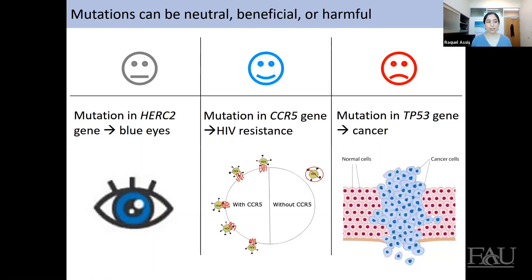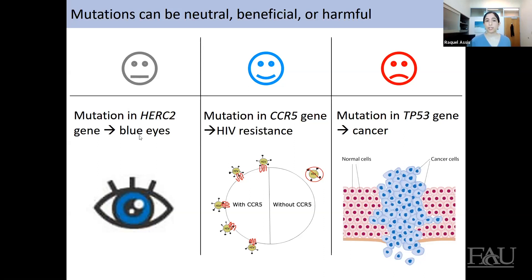You may automatically think of a mutation as something bad, but mutations can have a whole range of effects. They can be neutral — no effect on function. They can be beneficial — a positive effect. Or they can be harmful — a negative effect. For a neutral mutation: about 10,000 years ago, a mutation in the HERC2 gene caused blue eyes to arise. Before that, all individuals had either brown or green eyes. This is neutral because it has no effect on function — it doesn't allow you to see better and it's not harmful.